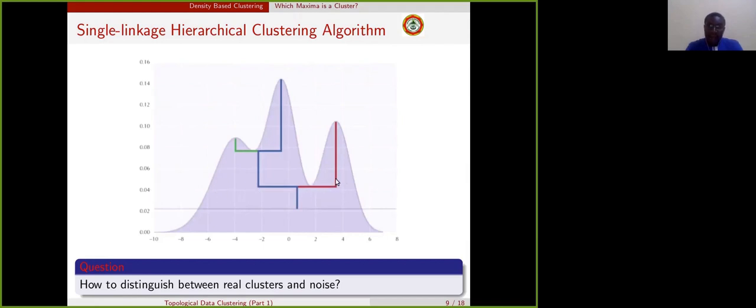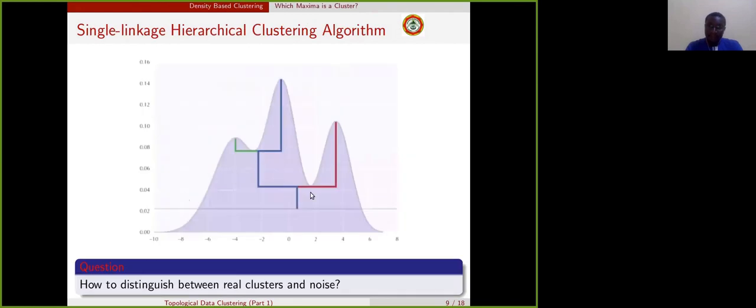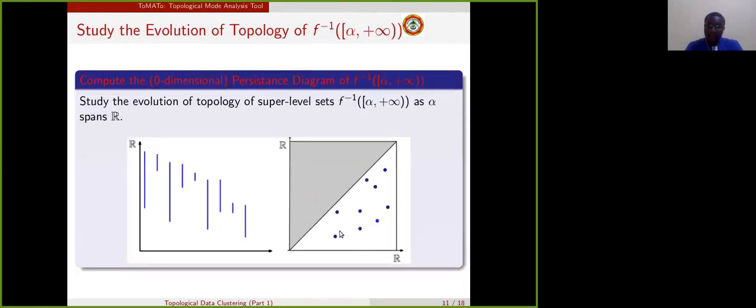We say that it has died because it is merged with all those clusters. When we have the birth and the death of the peak, we can then plot those bars in what we call the persistence diagram following this strategy. The birth of the cluster is plotted on the X axis and the death of the clusters is plotted on the Y axis. By doing so, for all the bars, we can obtain several dots which correspond to our potential clusters.